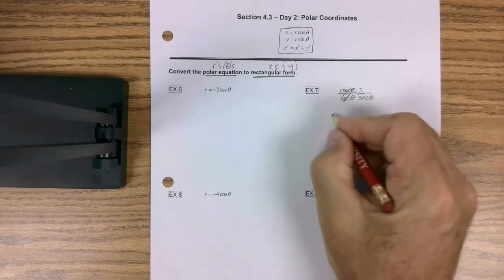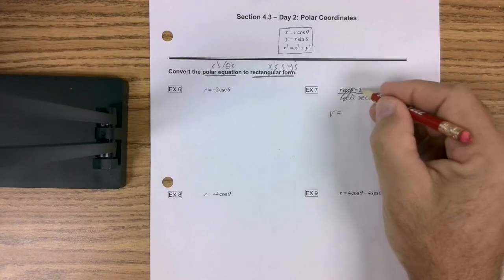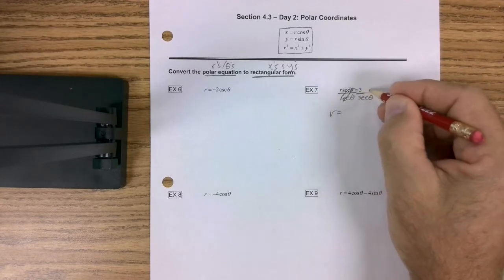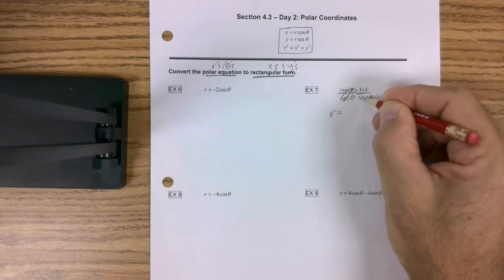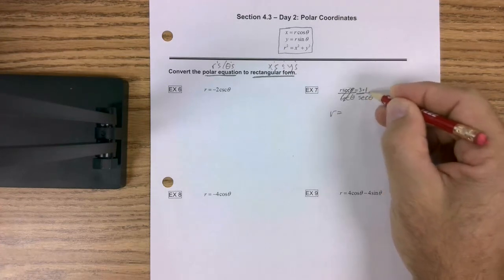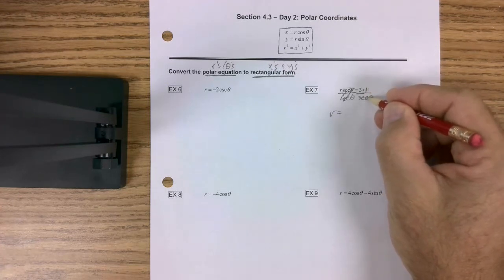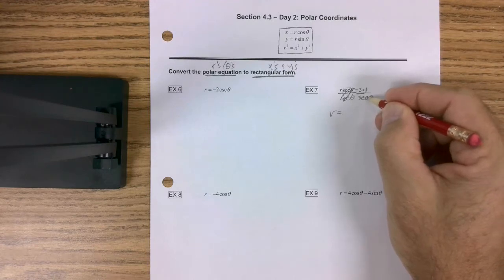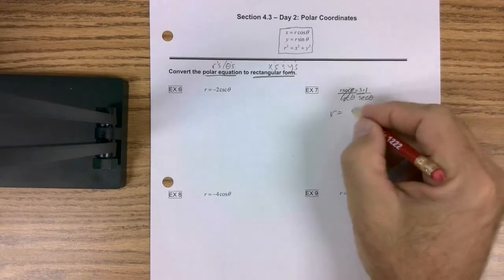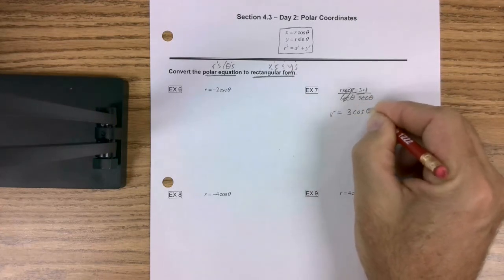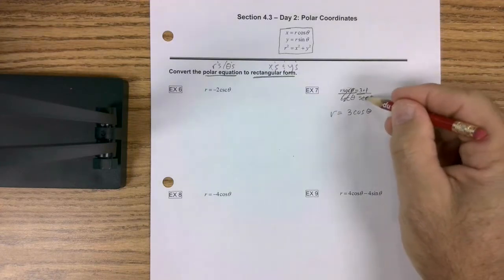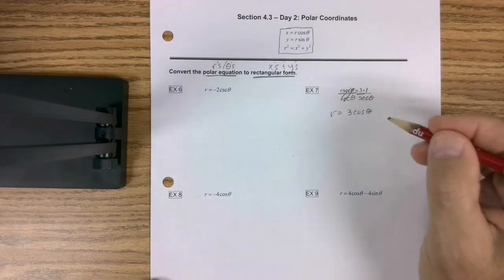So these cancel and I get r equals. Now you have to ignore the three for a second. But what's one over secant? In other words, if I flip secant, what's the reciprocal of secant? Well, that'd be cosine. So I'm going to just go ahead and say this equals three cosine theta, because that's what one over secant is.